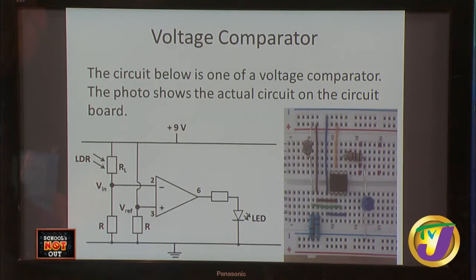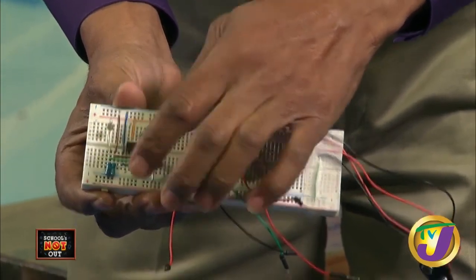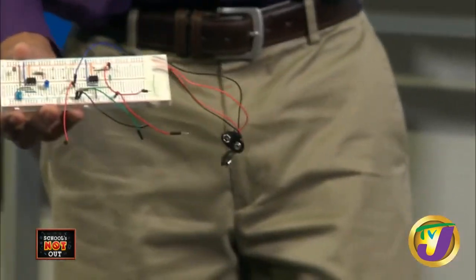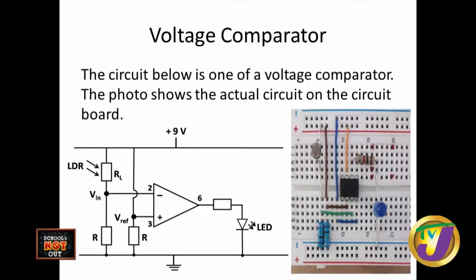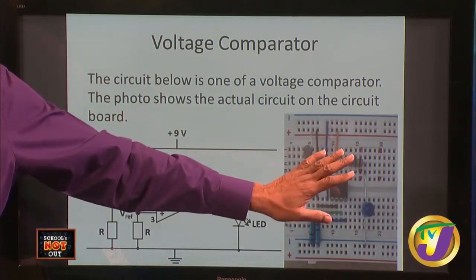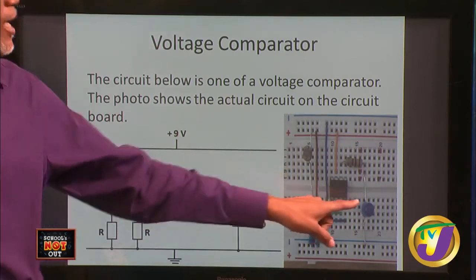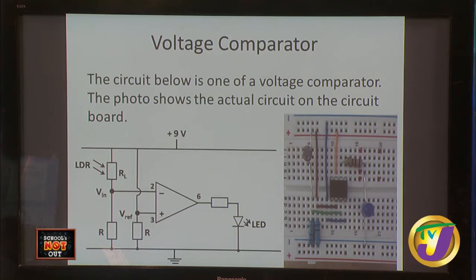Here is a voltage comparator circuit. The circuit includes the op-amp, an LED, a light dependent resistor (LDR), and other resistors. What the demonstration would have shown: when I cover the light dependent resistor making it dark, the LED comes on. When I remove my hand and there is light, the LED goes off. So when it's dark the LED comes on, and when there's light it goes off.